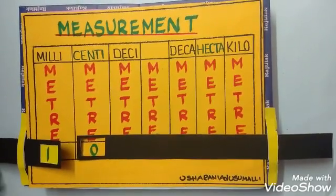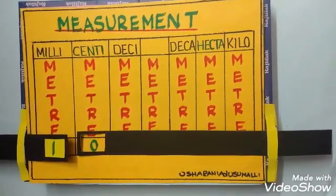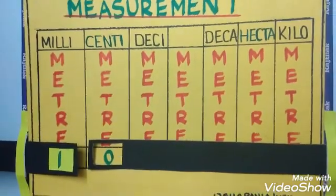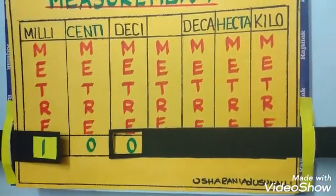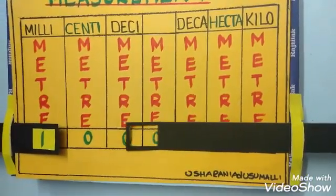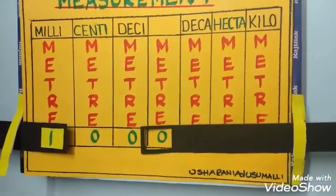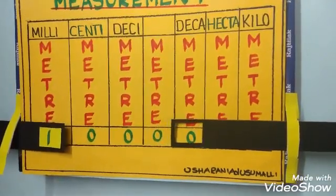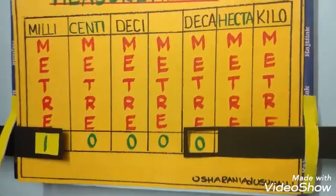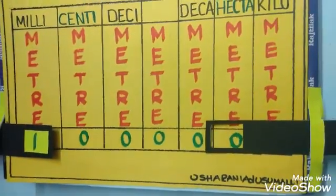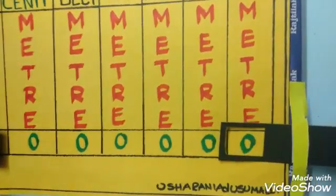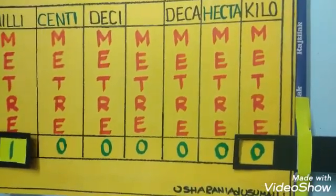First of all place one at millimeter position. Now 10 millimeters is equal to 1 centimeter. 100 millimeters is equal to 1 decimeter. 1000 millimeters is equal to 1 meter. 10,000 millimeters is equal to 1 dekameter. 1 lakh millimeters is equal to 1 hectometer. 10 lakhs millimeters is equal to 1 kilometer.